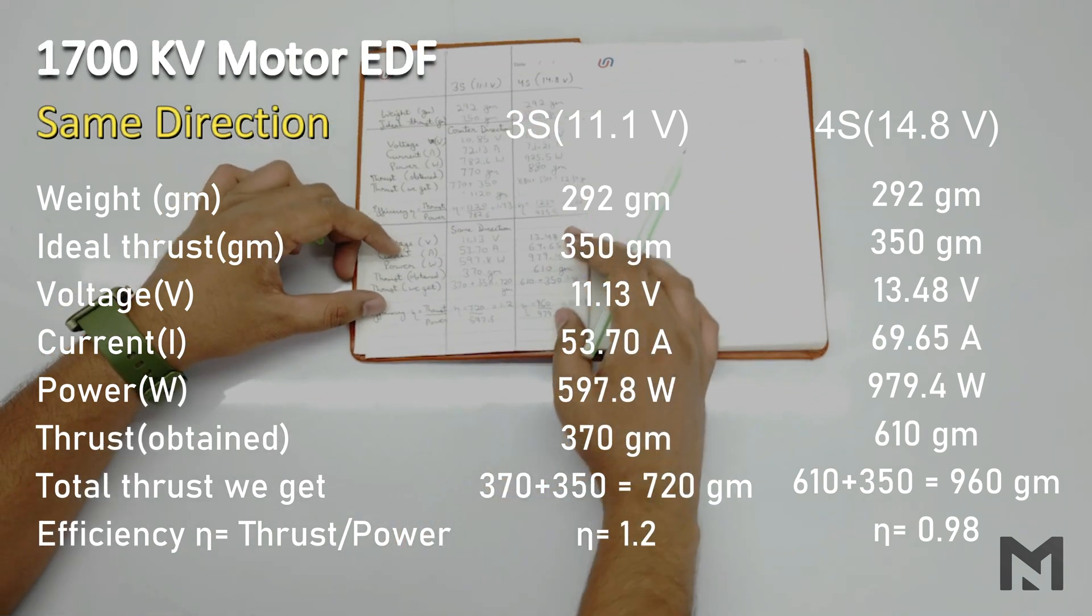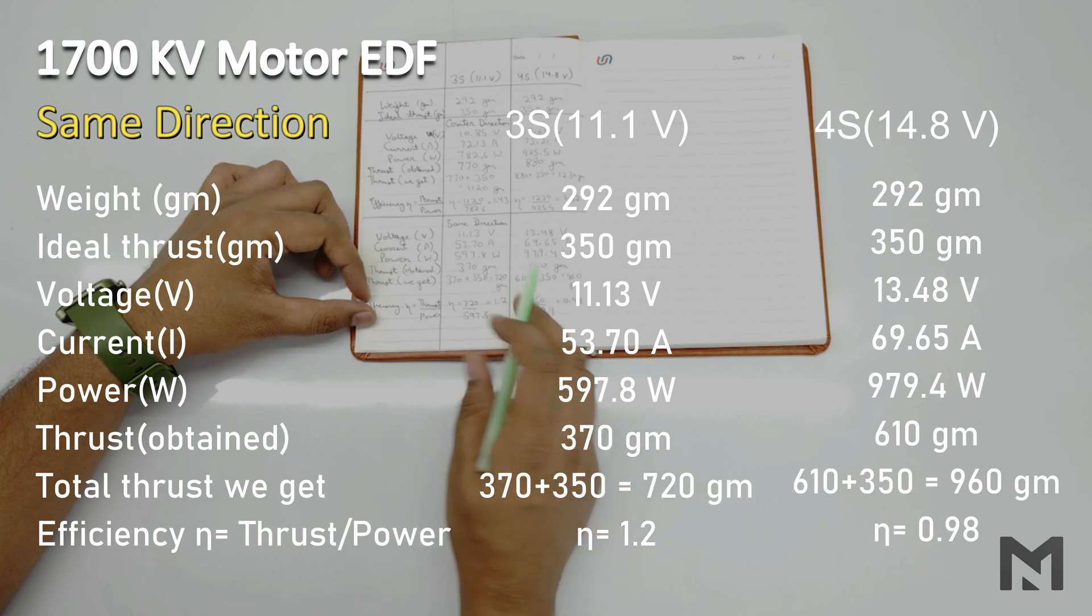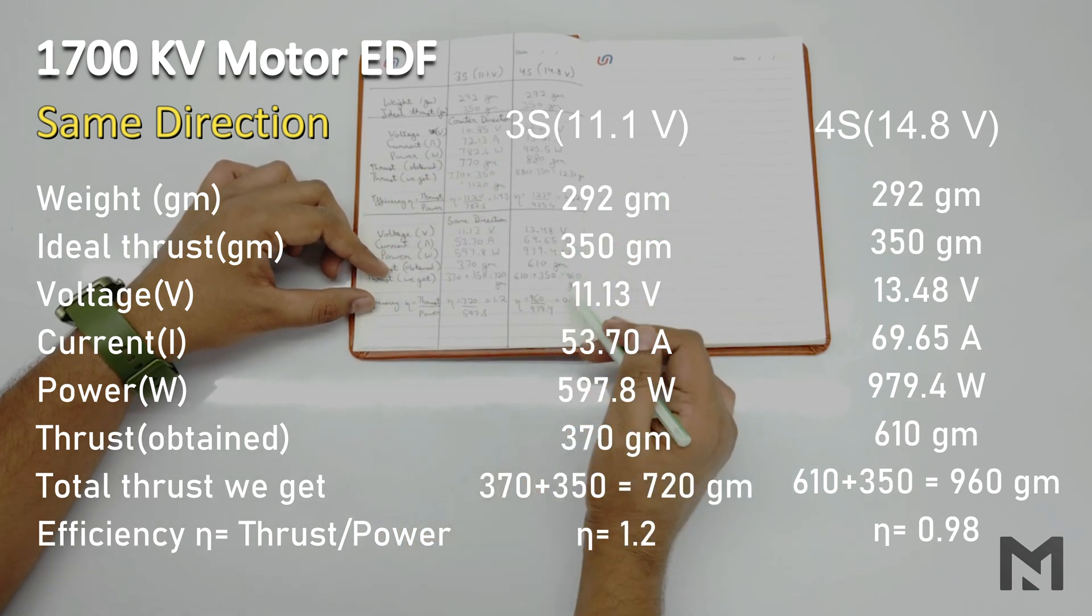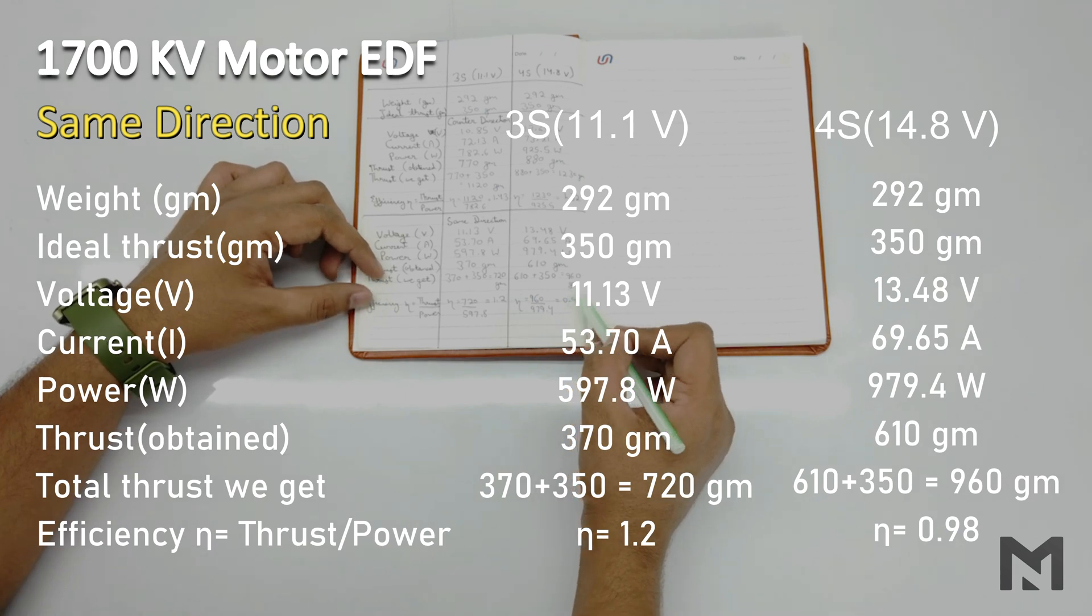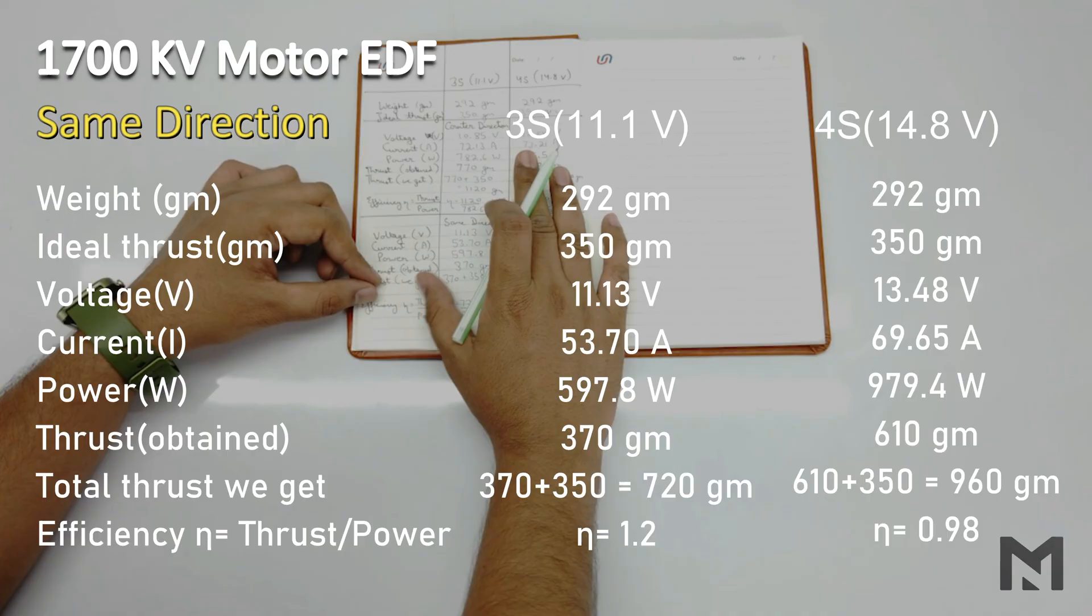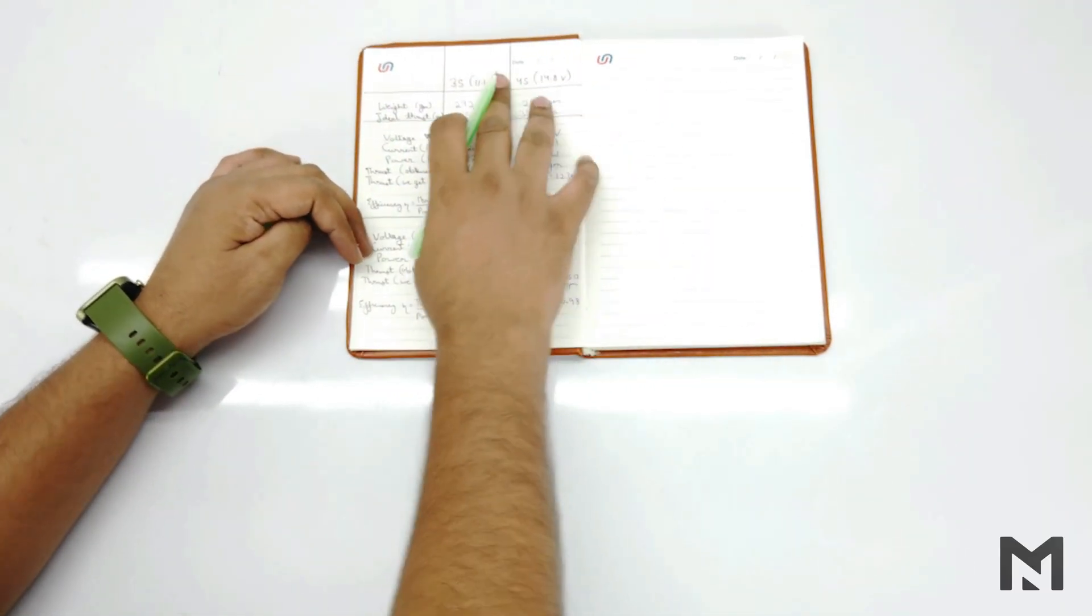And now moving on to the same direction configuration. It produced a thrust of 720 grams at 1.2 efficiency using a 3S battery. And produced a thrust of 960 grams at 0.98 efficiency using a 4S battery. It is least efficient. It only produced a lot of noise. So we will be only using a counter direction EDF wherever required.